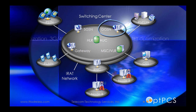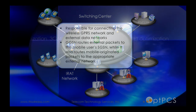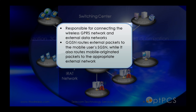The Gateway GPRS Support Node, or GGSN, is responsible for connecting the wireless GPRS network and the external data networks. The GGSN routes external packets to the mobile user's SGSN, while it also routes mobile-originated packets to the appropriate external network.